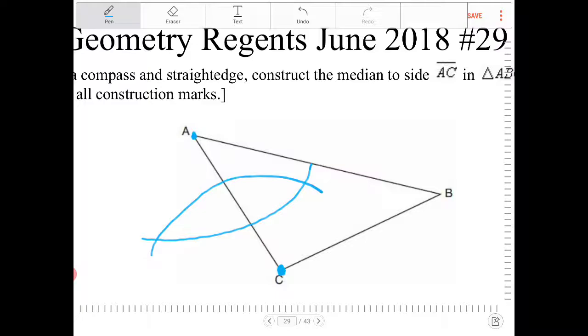The intersection of these two arcs will form the perpendicular bisector. These two points will form the line segment that is, in fact, the perpendicular bisector. So you're going to take a straight edge, and you're going to draw a line connecting those two points there. And this point here is going to be the midpoint of AC.